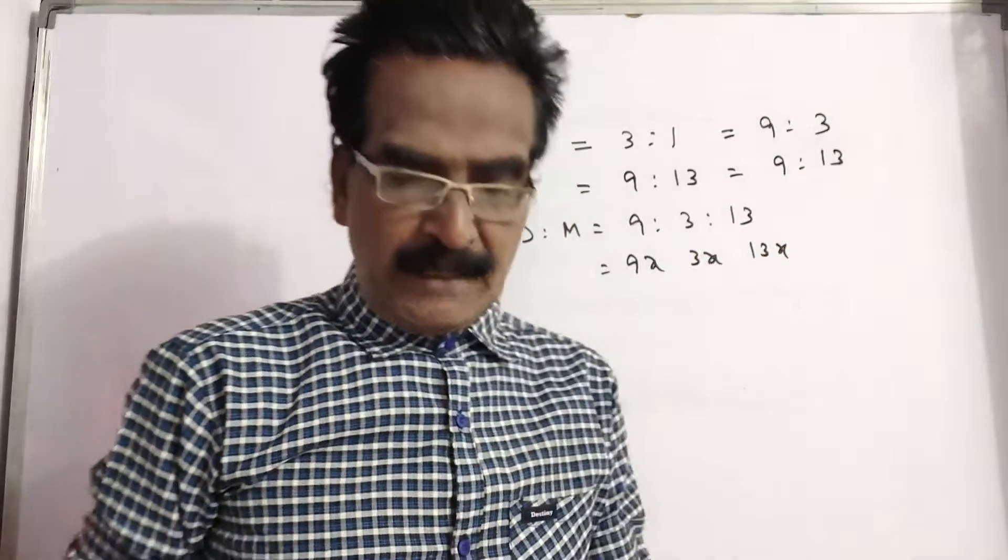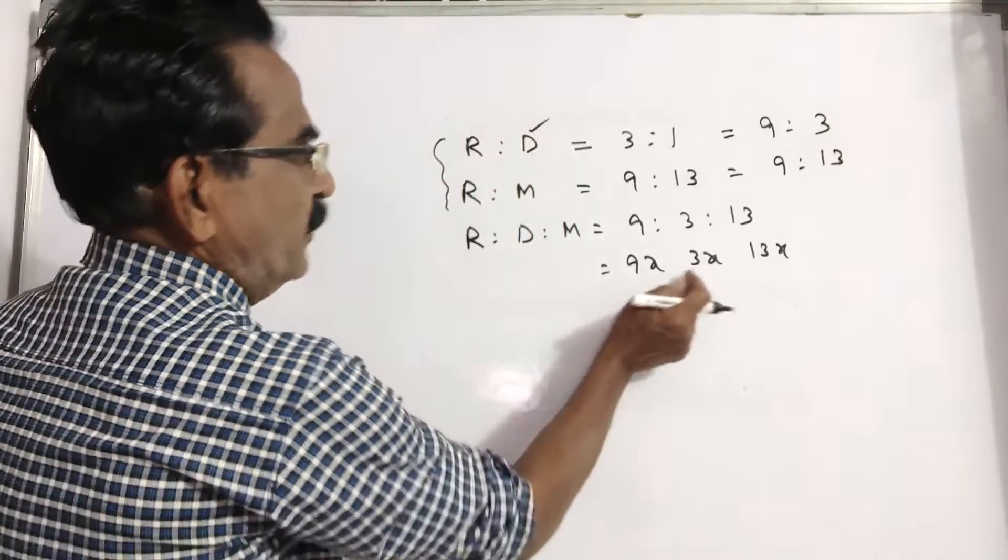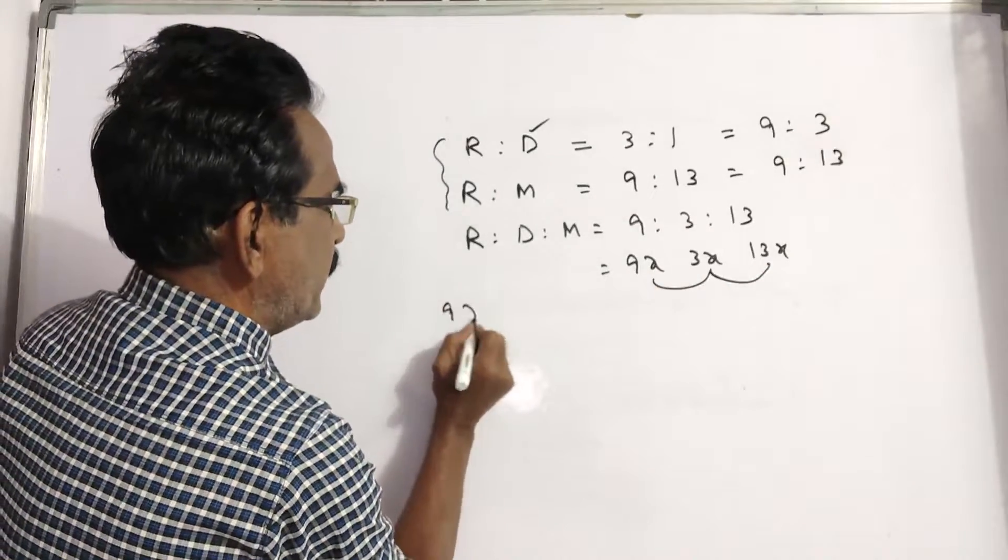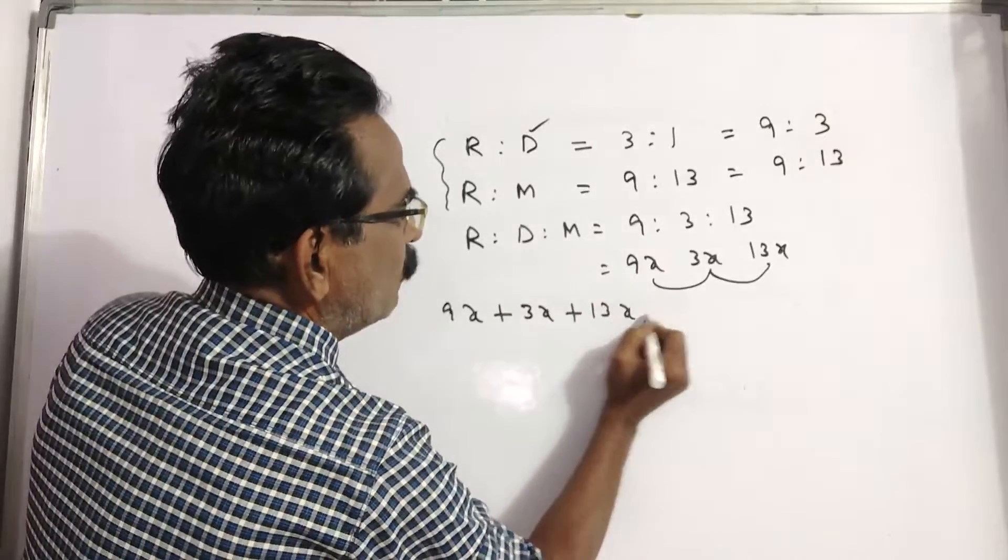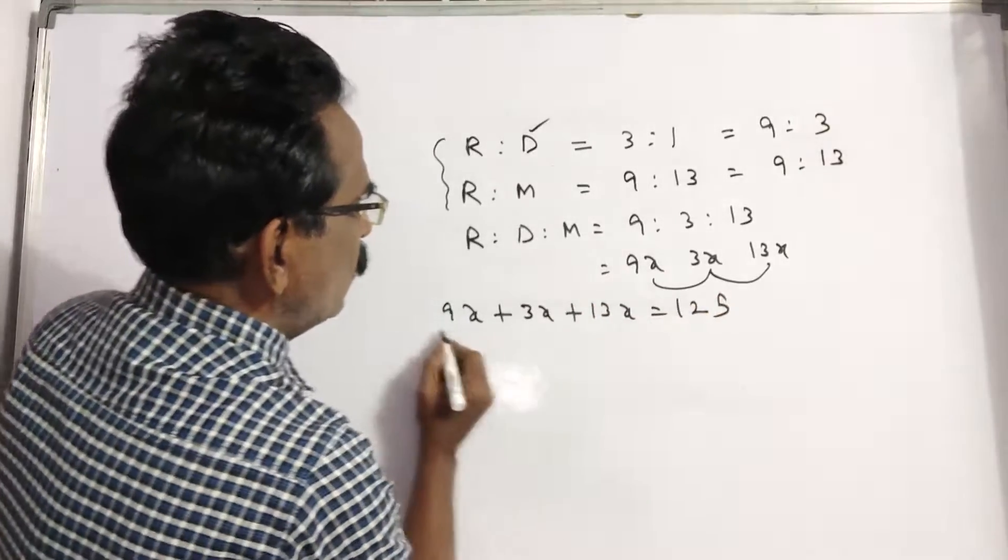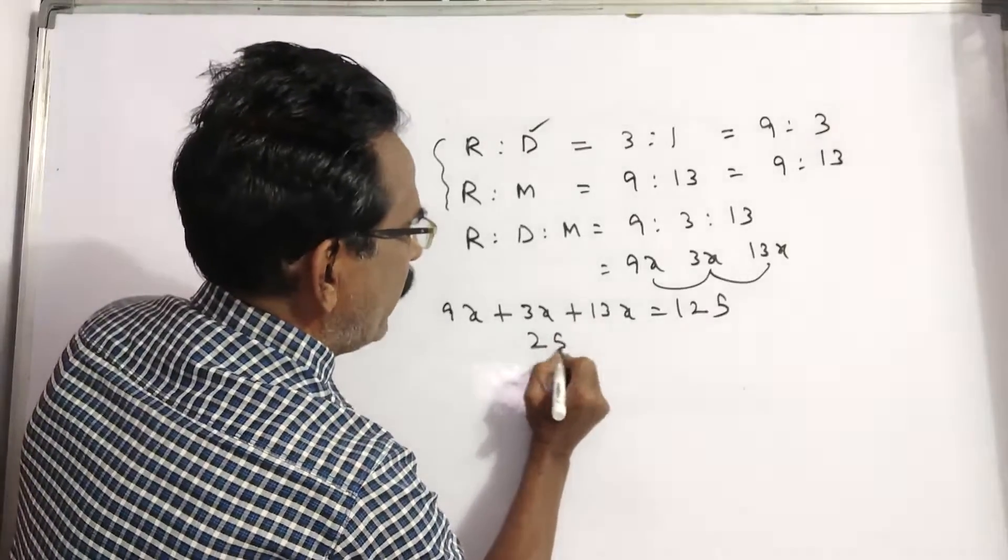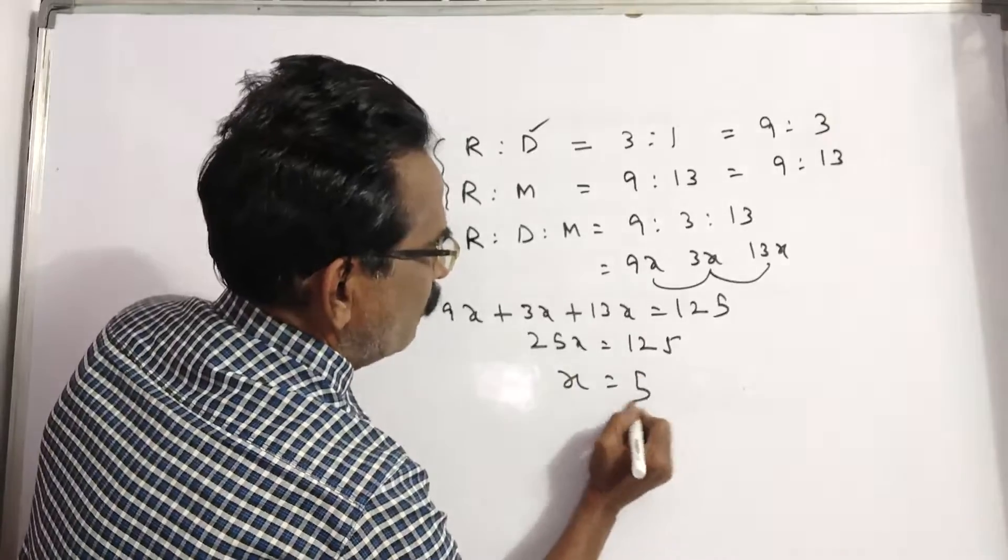Now given that sum of the ages is one twenty five years. Sum of the ages according to our calculation is nine X plus three X plus thirteen X is equal to one twenty five. So this is twenty five X. Twenty five X is equal to one twenty five and X is equal to five.